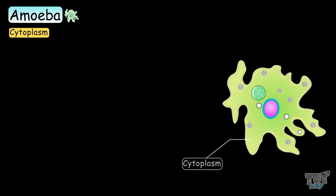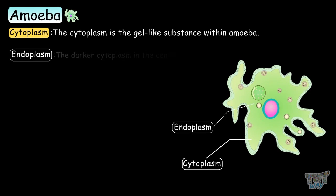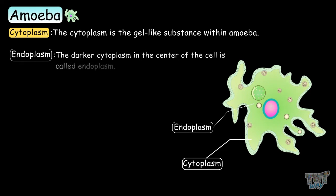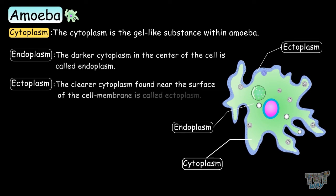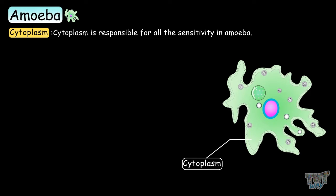The cytoplasm is a gel-like substance within the amoeba. It is of two types: endoplasm, which is the darker cytoplasm in the center of the cell, and ectoplasm, which is a clearer cytoplasm found near the surface of the cell membrane. Cytoplasm is responsible for all sensitivities in the amoeba.